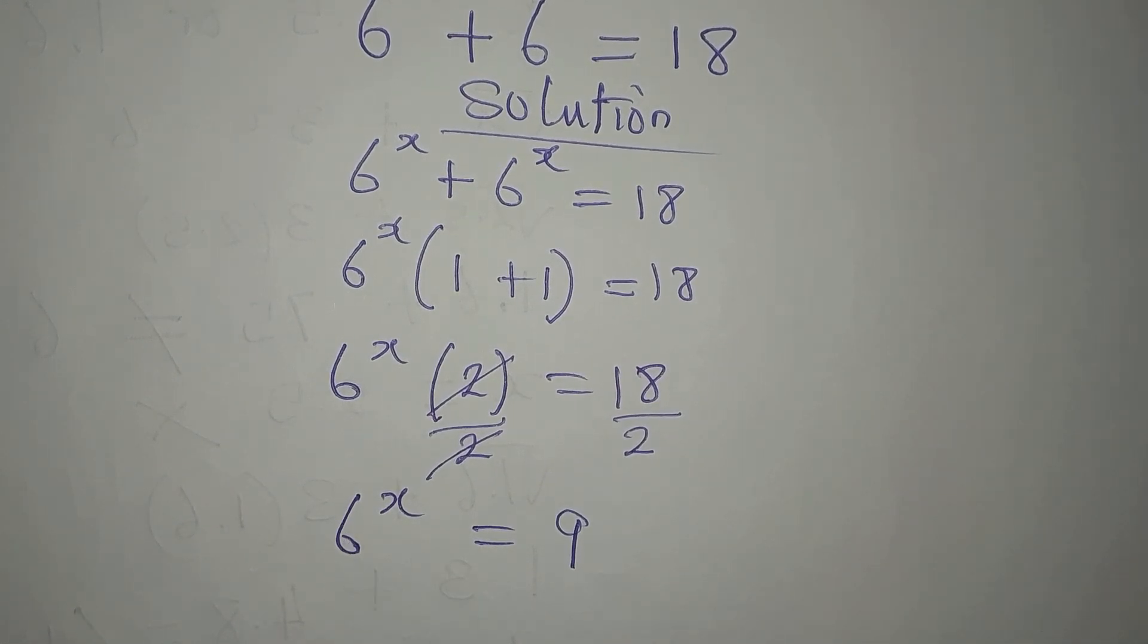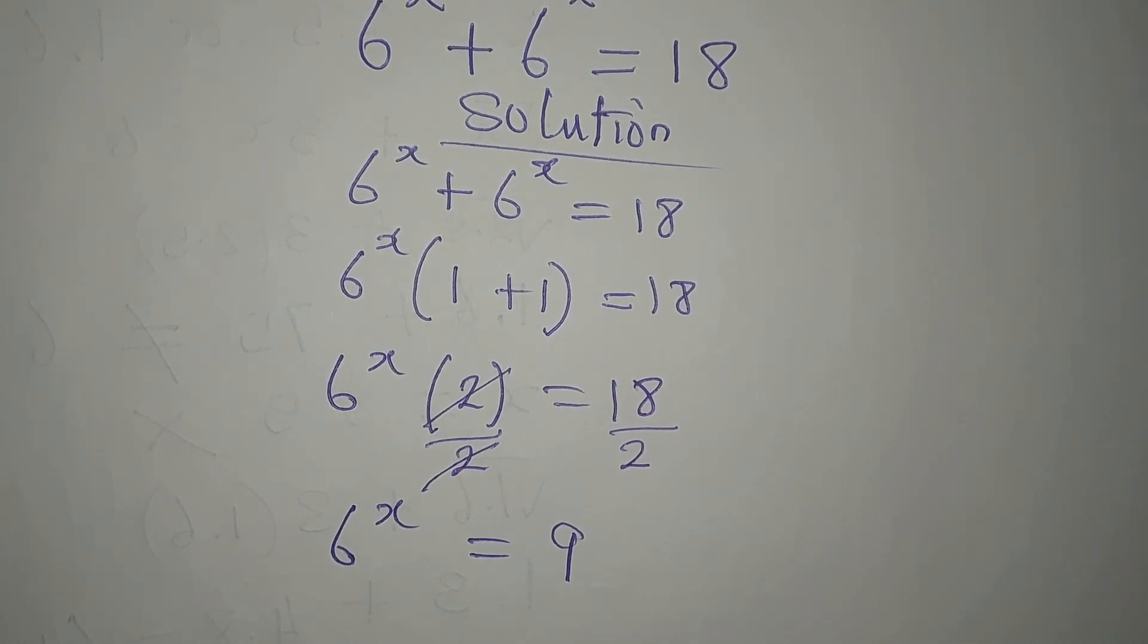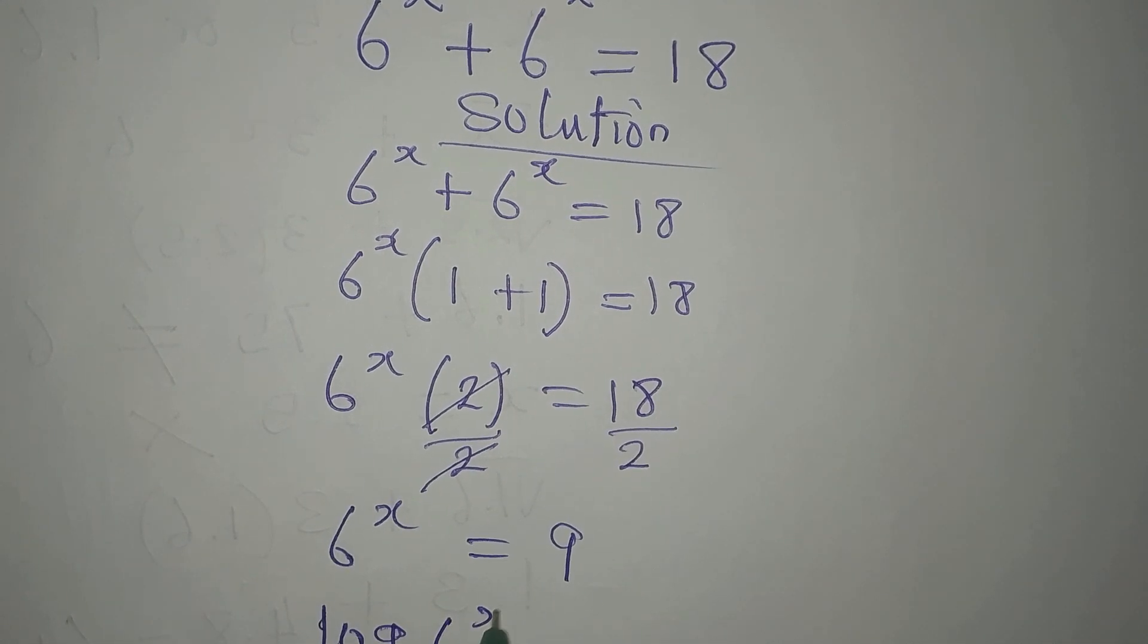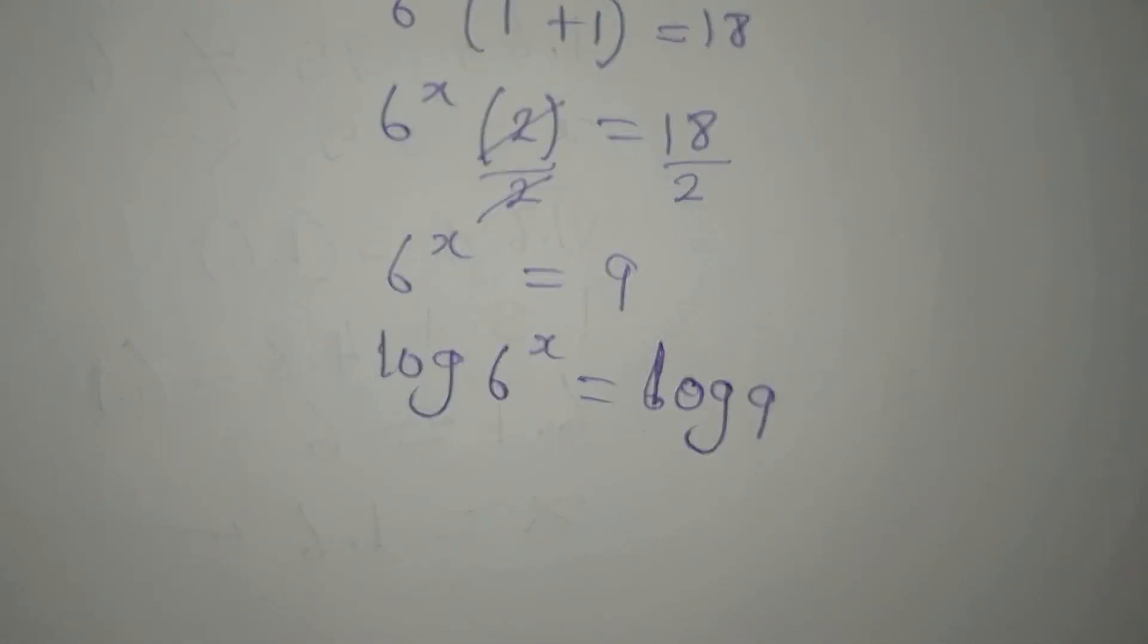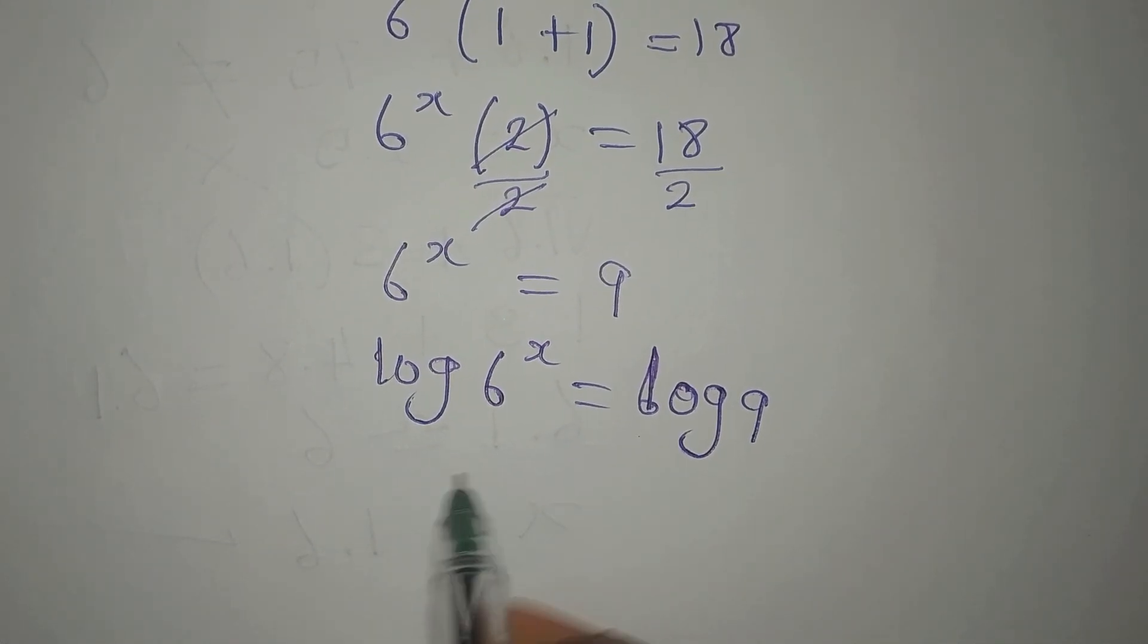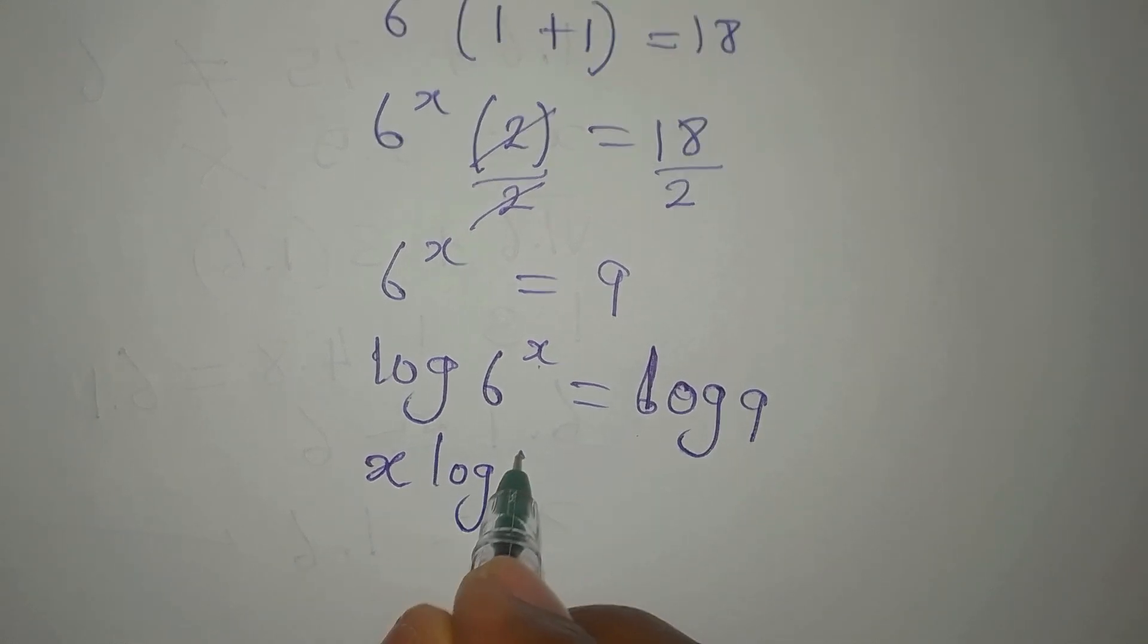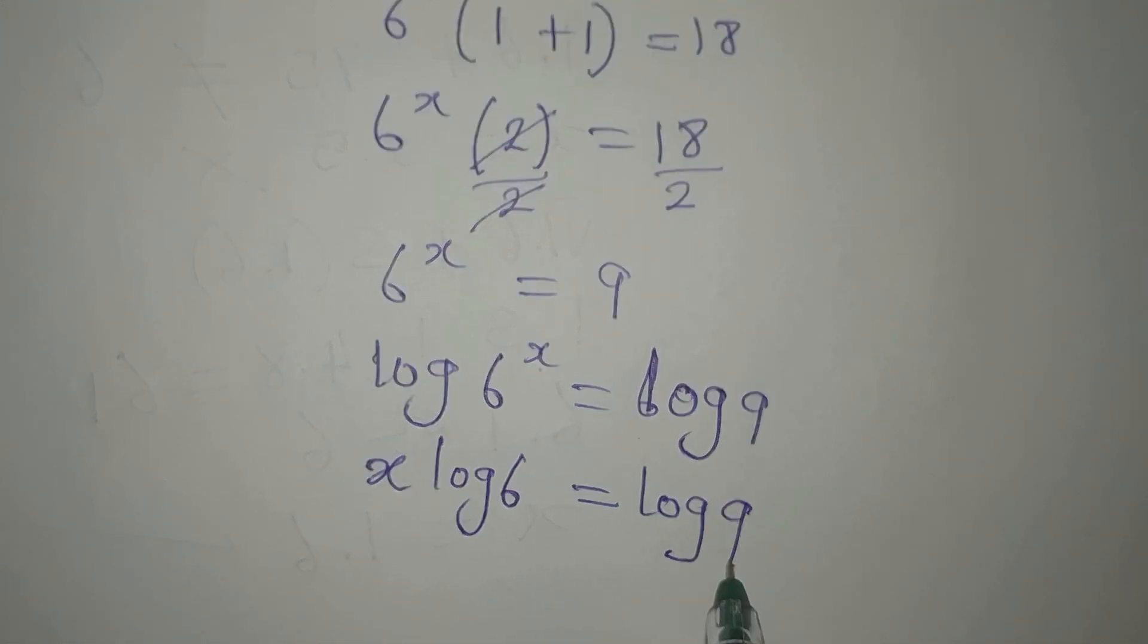But we can take the log of both sides. So we'll now say that log 6 to the power of x equals log 9. Right, now the power here will go behind to multiply log 6, and then on the other side we have log 9.